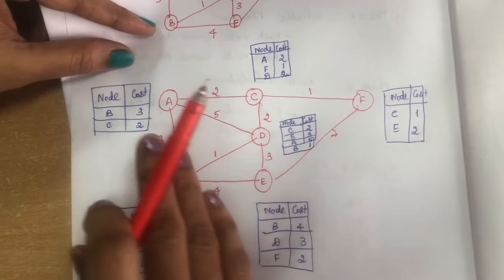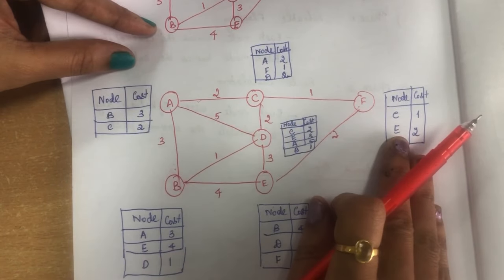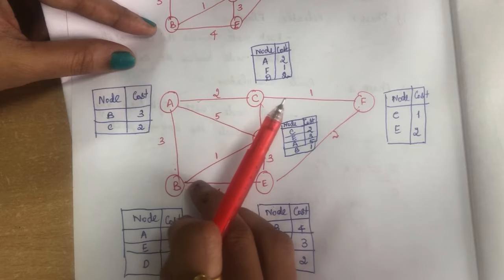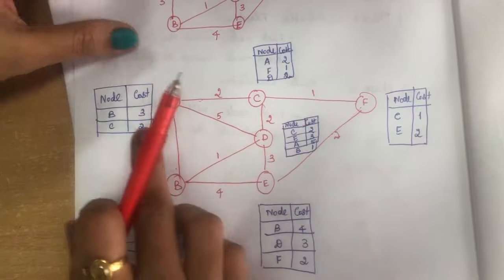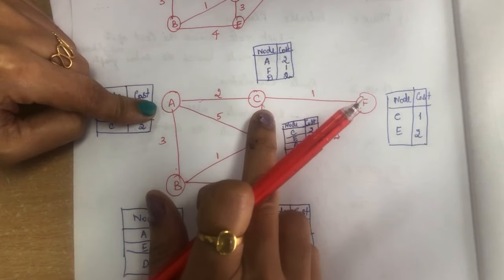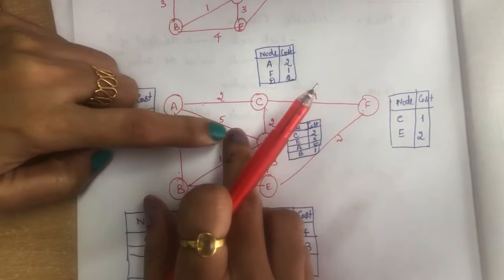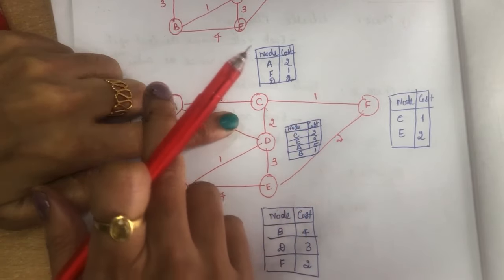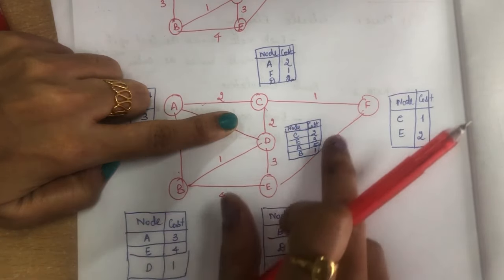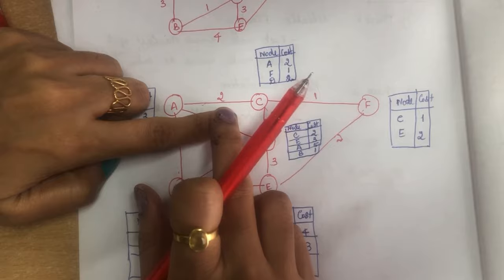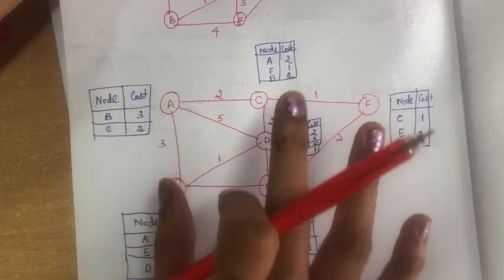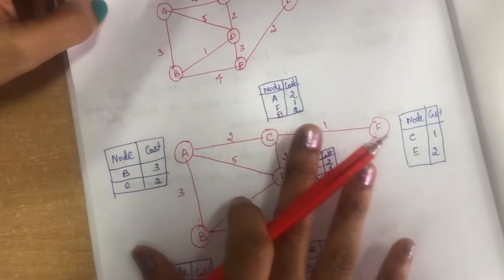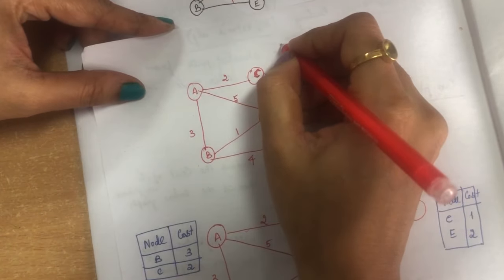This is the link state information. Instead of sending the entire routing table, it sends only the nearest neighbor's information across the entire network. So node A will get the link state information of B, C, D, E, and F. Similarly, C will get the link state information of A, D, B, E, and F. Every node finds out the link state information and floods the entire network with this information. This is the first process — flooding.